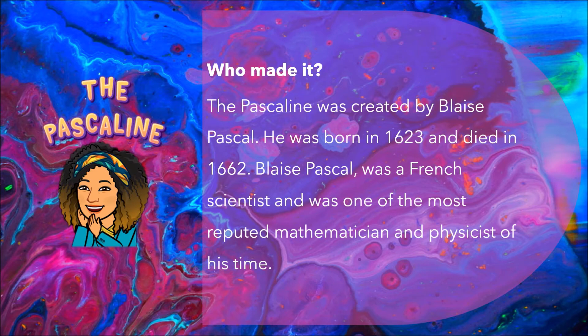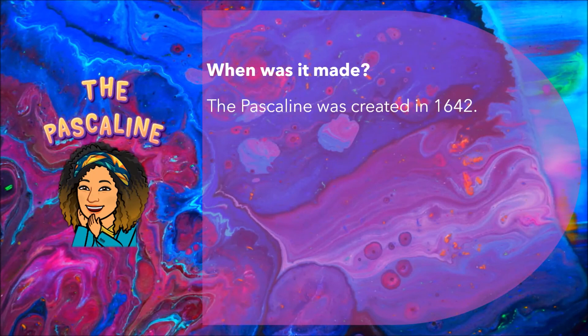Blaise Pascal set fire to the road when he created the Pascaline. Blaise Pascal was the creator of the Pascaline. Blaise was born in 1623 and died in 1662. He was an excellent French mathematician and also a scientist, and you can see all of his achievements in the mere fact that he created the Pascaline. Can you tell me how old Blaise was when he died? It's a simple calculation — you don't even need the Pascaline to figure that one out!